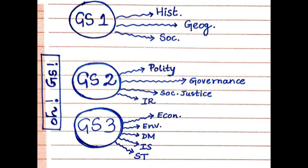For example, GS1 has History, Geography, and Society. GS2 has Polity, Governance, Social Justice, and International Relations. GS3 has Economics, Environment, Disaster Management, Internal Security, and Science and Technology. So in total, you will have to read 12 subjects to cover the entire syllabus of GS1, 2, and 3 — but they add up to only 750 marks.